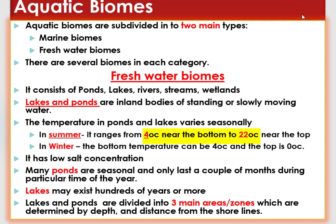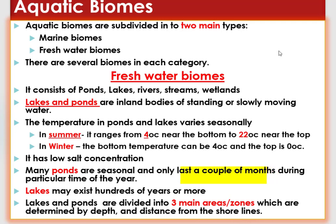The temperature of ponds and lakes varies seasonally. In summer, the temperature ranges from 4 degrees Celsius near the bottom to 22 degrees Celsius near the top of the lakes. In winter, the bottom temperature can be 4 degrees Celsius and the top is 0 degrees Celsius. Lakes and ponds have low salt concentration. Many ponds are seasonal and only last a couple of months during a particular time of the year, but lakes may exist hundreds of years or more.